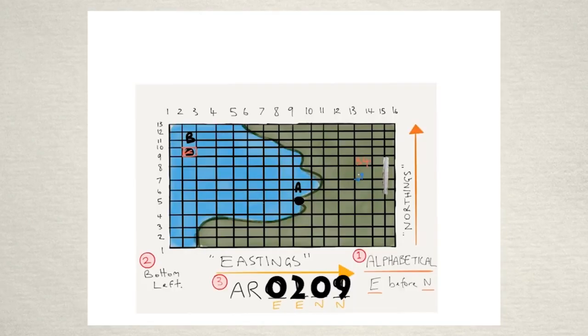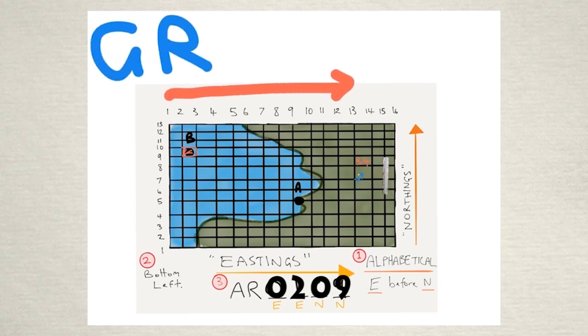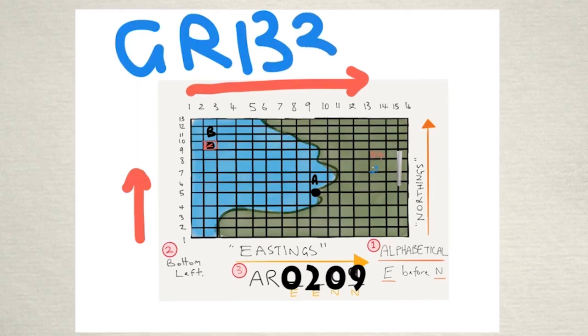And then rather than AR we're gonna put GR for grid reference and then we'll do the area reference first. So 1 3 here and 0 7. So grid reference 1 3 3 0 7 4.